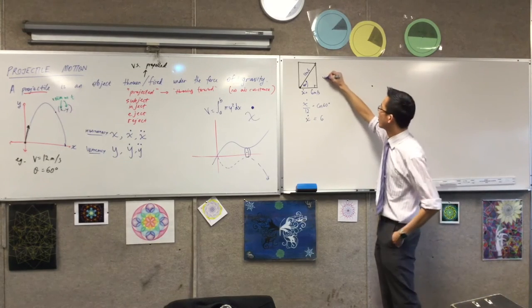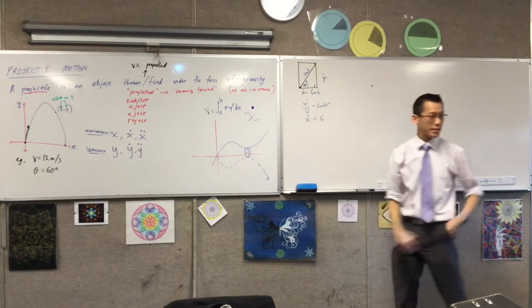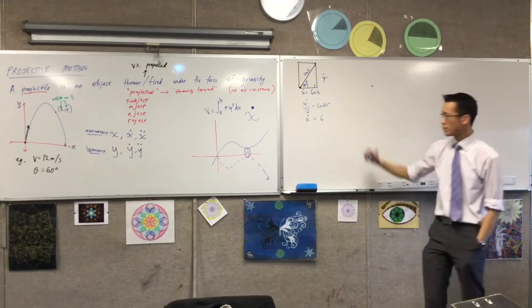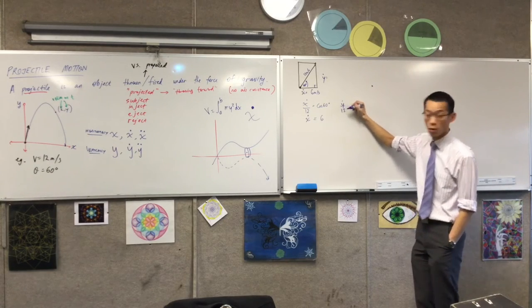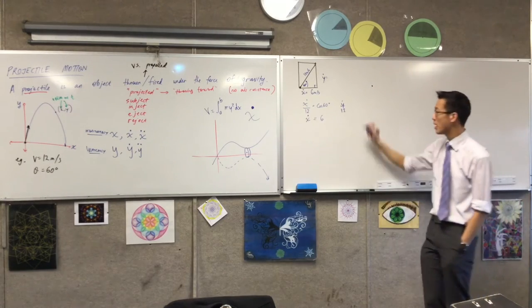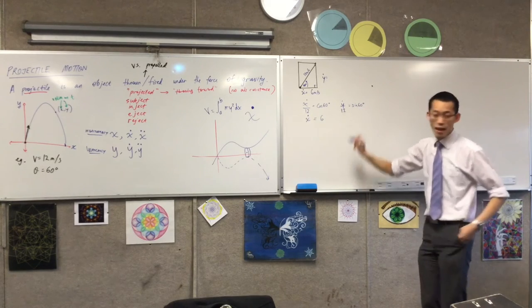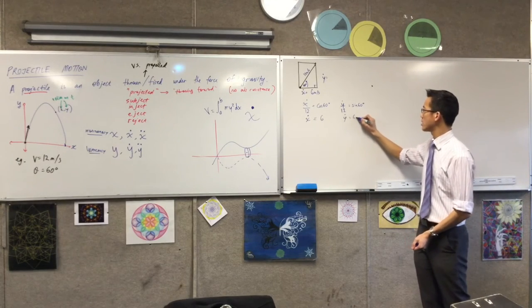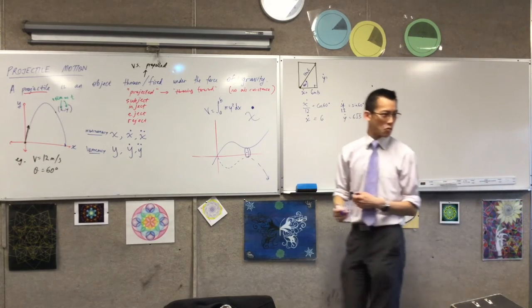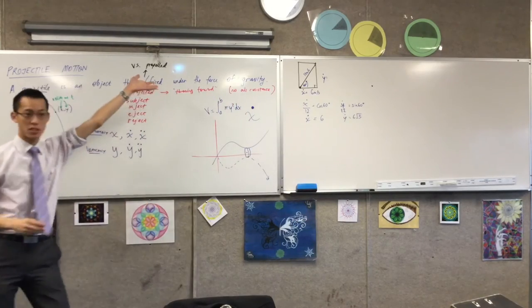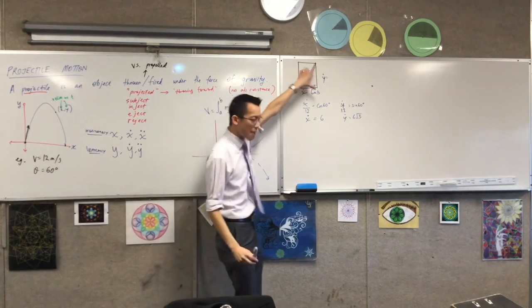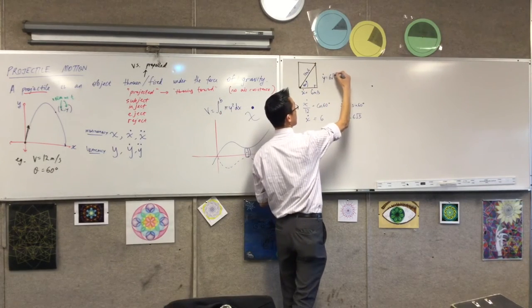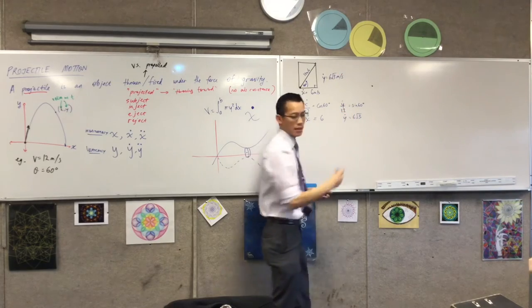In exactly the same way, I can work out y dot. That's this vertical change up here. What ratio am I going to use this time? Good. Sine will say y dot on 12. It's opposite on hypotenuse now. It's sine 60. And sine 60, of course, is root 3 on 2. So this is just 6 root 3. Root 3 is about 1.7-ish. And that just corresponds to our diagram, you can see. This is about 1.7 times further than this. Does that make sense? So you can see this is going to be 6 root 3 metres per second.